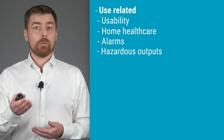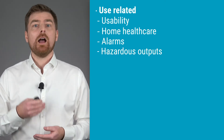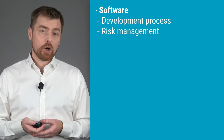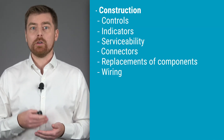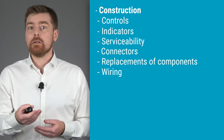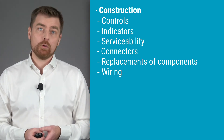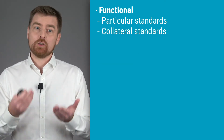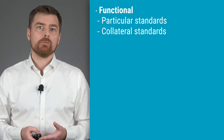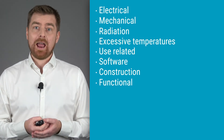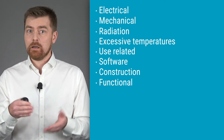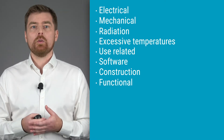Use-related requirements include usability, home healthcare, alarms and hazardous outputs. Software requirements include requirements for the development process and risk management. Constructural requirements relate to controls, indicators, serviceability, connectors, replacement of components and wiring. Functional requirements are often defined in particular standards and in some of the collateral standards. All these requirements and other hazards relevant to your device need to be identified and managed through the risk management process.